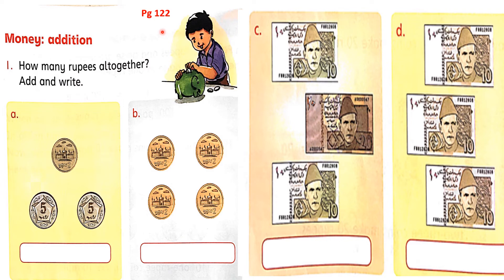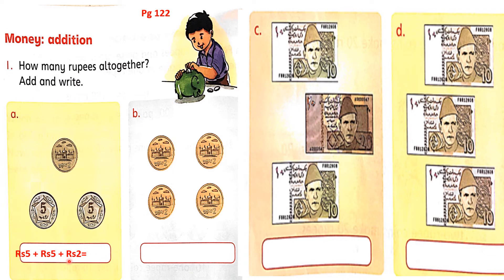Students, now open book page number 122. Write the date and day. The topic here is money addition — how many rupees altogether? First we will add some coins, then we have notes. In question number A, there are three coins: five rupees, five rupees, and two rupees. We write: RS 5 + RS 5 + RS 2. Five and five make ten, ten and two make twelve. So total we have RS 12. Don't forget to write RS.